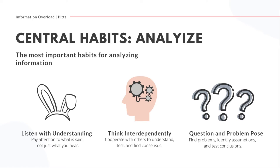Now we've taken the first step to decipher and gather information — we've done the early part of getting all the information we need in front of us. Now it's time to analyze. Once you've begun to decipher the information and figured out what is relevant to the question at hand, you can take steps to think about that information more formally. I suggest using three skills: listening with understanding, thinking interdependently, and questioning and problem posing. Listening with understanding is the first step toward seeing the problem as others see it.